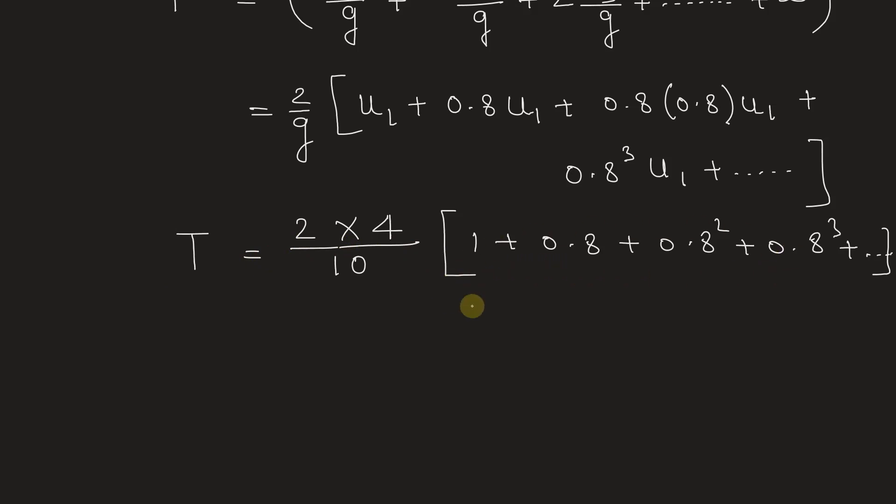Now if we take a closer look here, we can see that this series is in GP, geometric progression, with the common ratio r is 0.8 and the first term is 1.